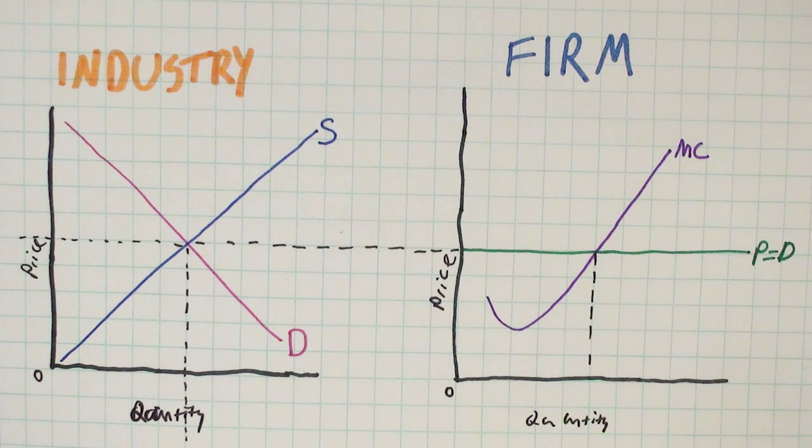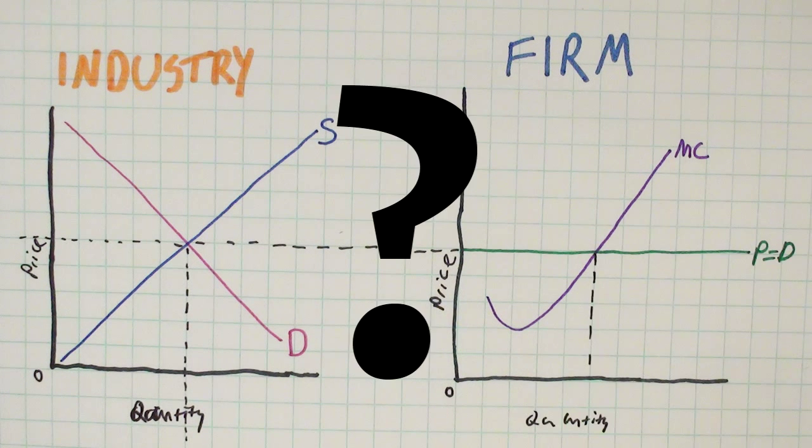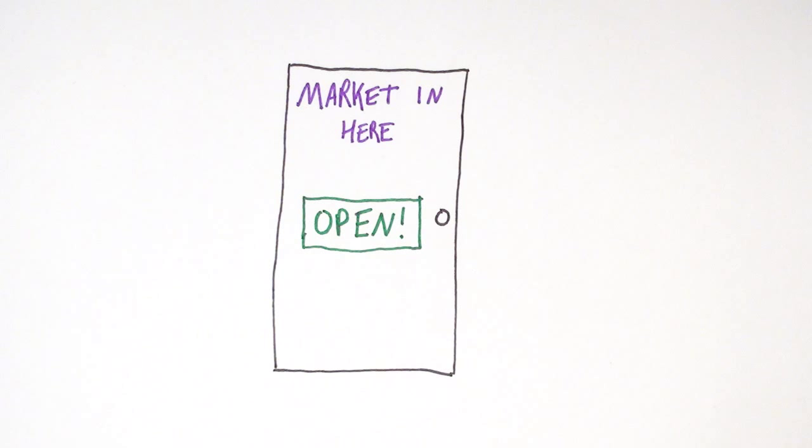The firm's output would then be set wherever their marginal cost crosses this line. But what happens if all the firms put together produce more or less than the market quantity we set on the left? Well, this is where the entry and exit rule comes into play.